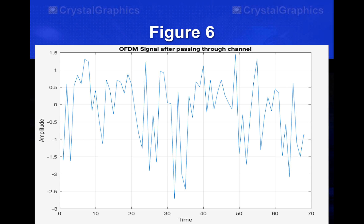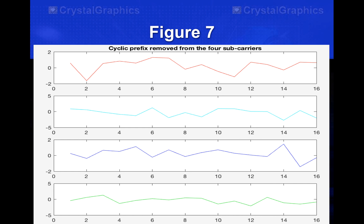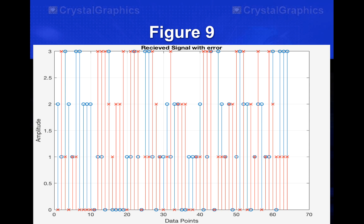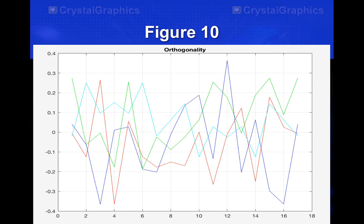This is the signal generated after the OFDM signal passes through the channel — the second phase. The OFDM signal received from the transmitter passes through the channel and this is the resulting output. At the receiver's end, the cyclic prefix is removed from the four subcarriers, then FFT is done on all four subcarriers, and finally we get the received signal. This is also the output for orthogonality as mentioned before.